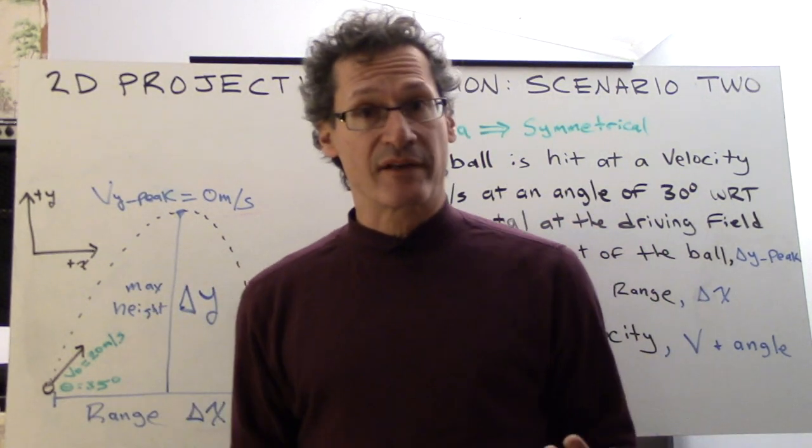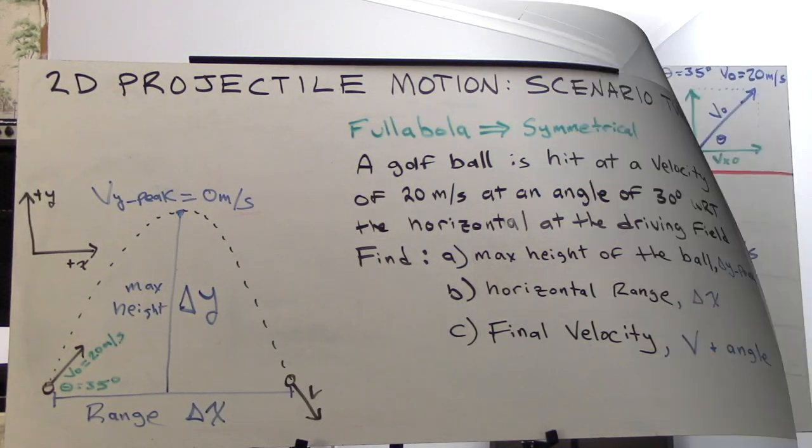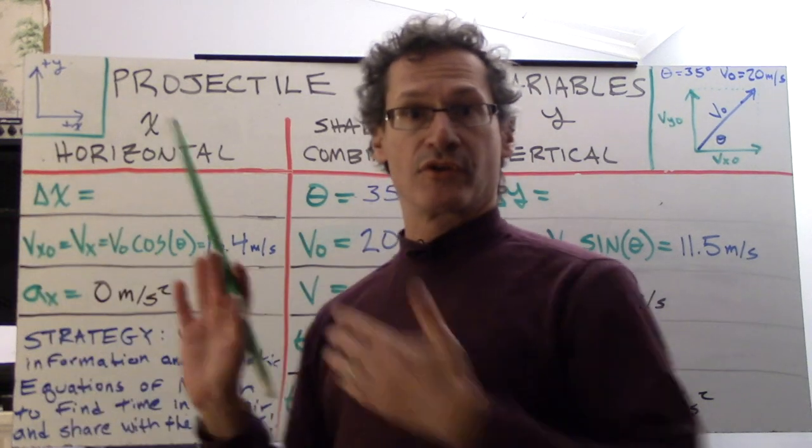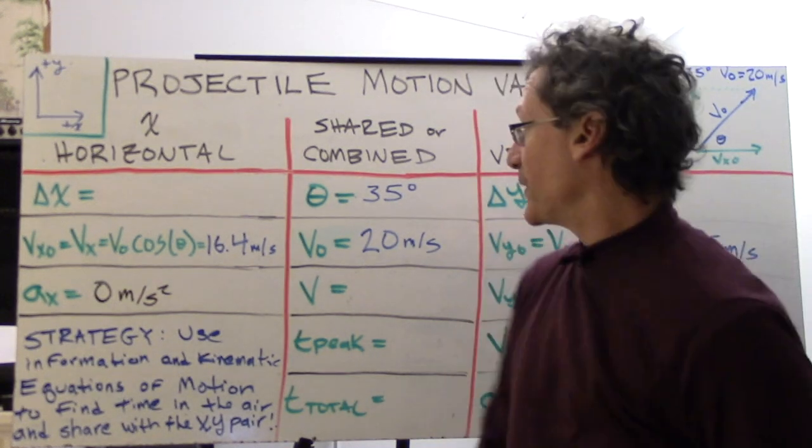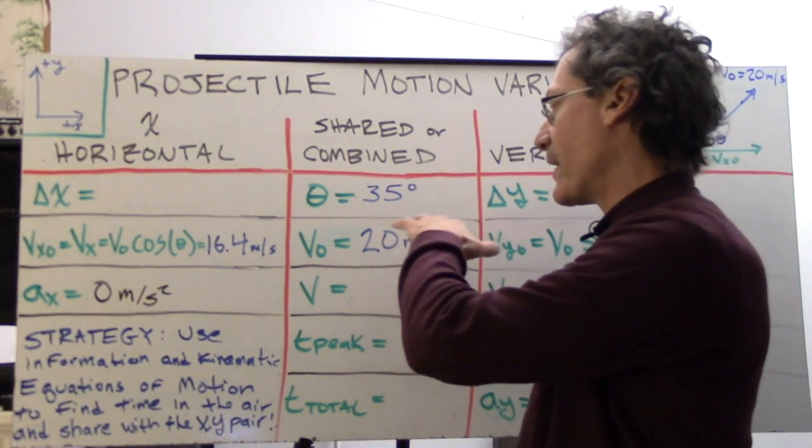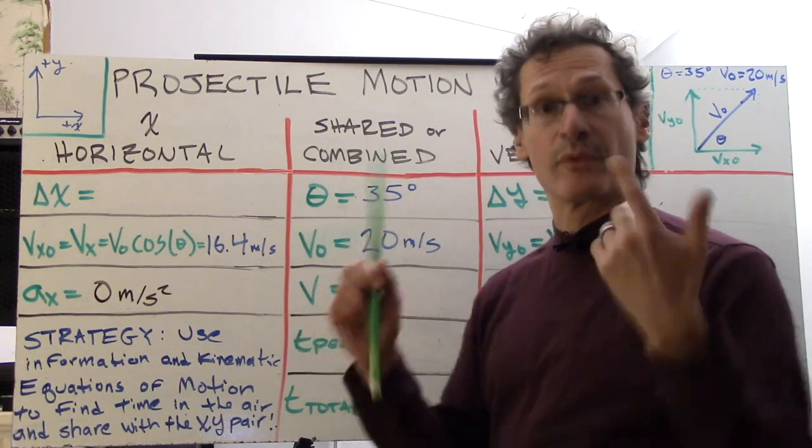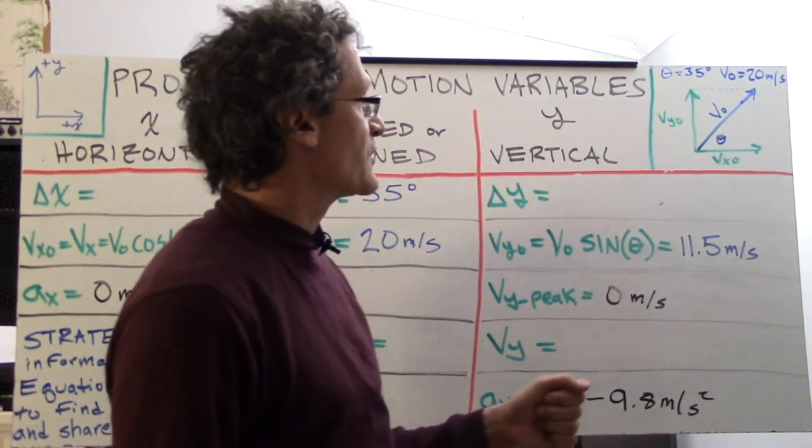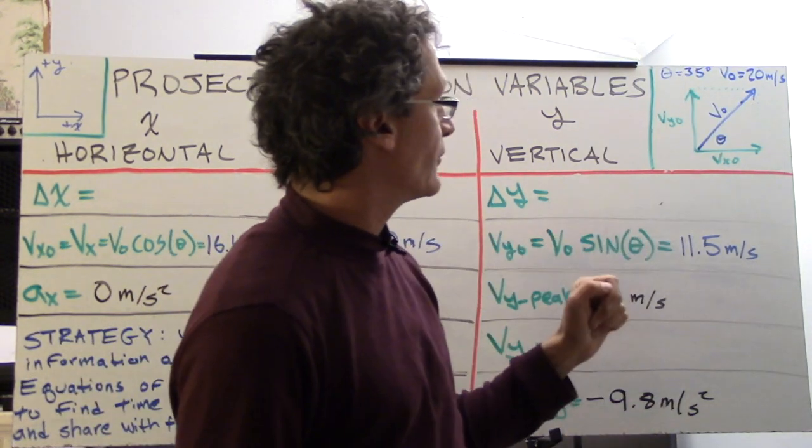Let's take a look at the variables that make up this situation. Here's our chart of 2D projectile motion variables. We have the shared or combined. Basically, the only information that we've been given is that we have an original velocity of 20 meters per second and an angle of 35 degrees with respect to the horizontal.